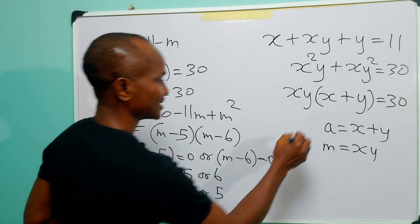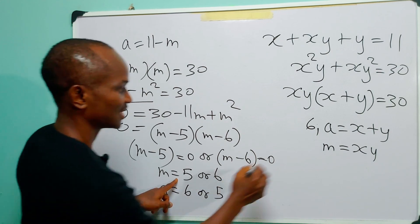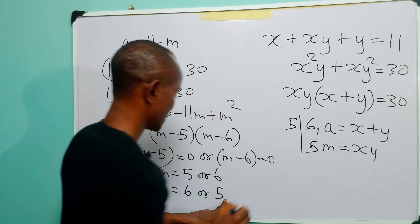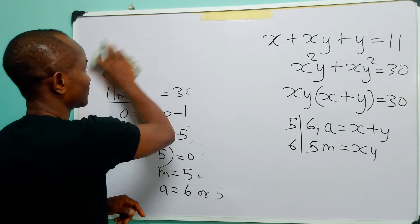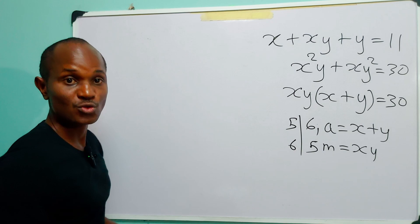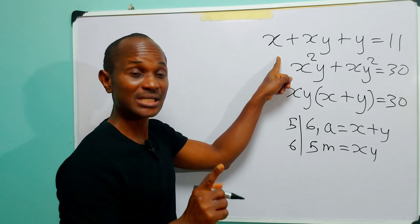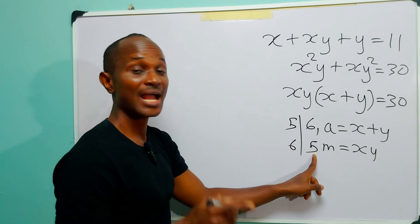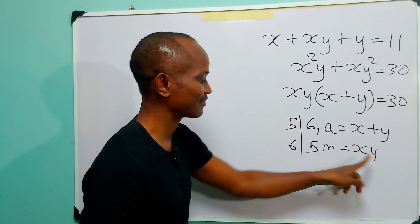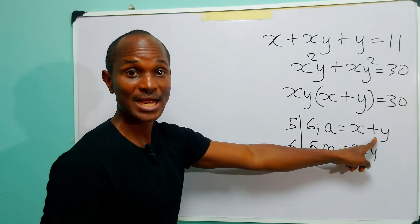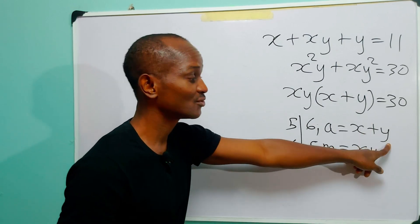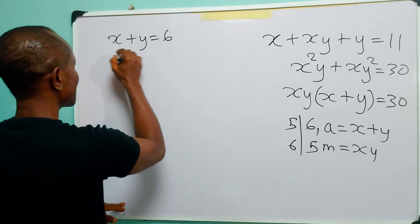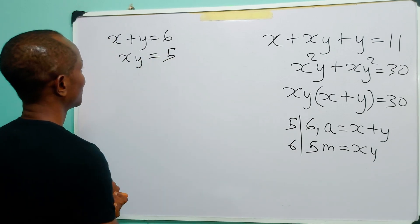Coming back to the original substitutions: when a equals 6, m equals 5, and when a equals 5, m equals 6. To solve this system completely, we will solve x plus y equals 6 and xy equals 5, and then solve x plus y equals 5 and xy equals 6. So we solve this two times for four values in total — two values of x and two values of y. The first case: x plus y is equal to 6 and xy is equal to 5.